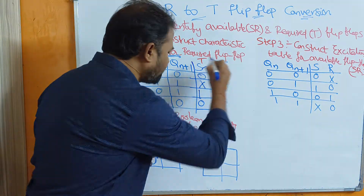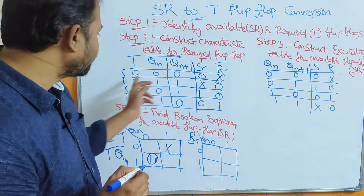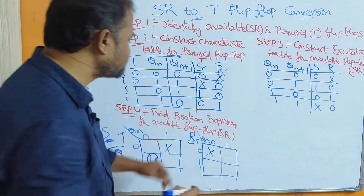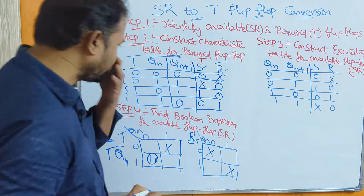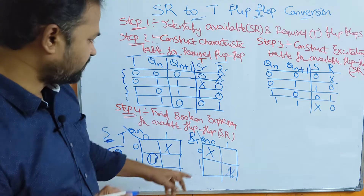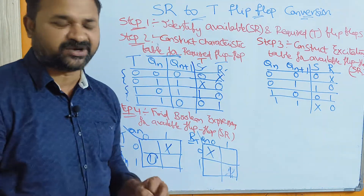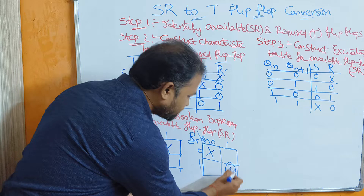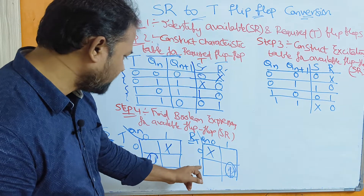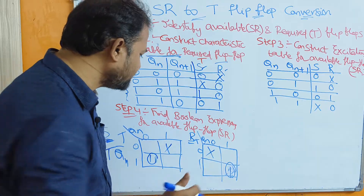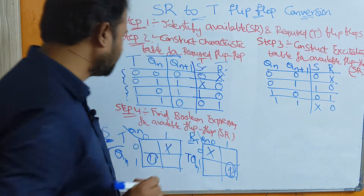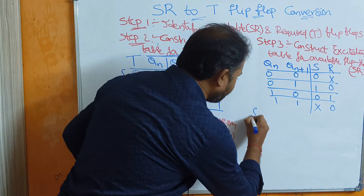Now observing the R column: the cell at T=1, Qn=1 has value 1 and cannot be grouped with others, so the group contains only one cell. T value is 1 and Qn value is 1, giving the expression for R as T·Qn. The last step is Step 5: we have to construct the logic diagram.